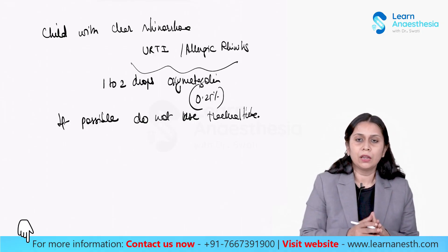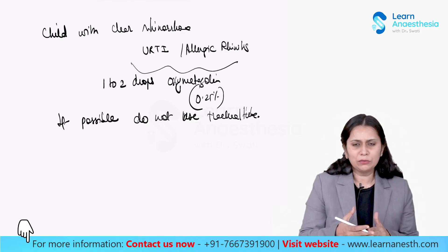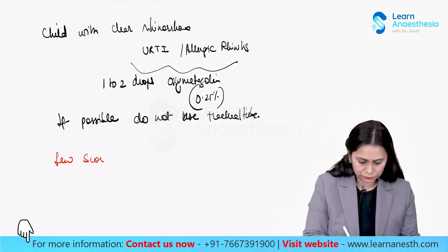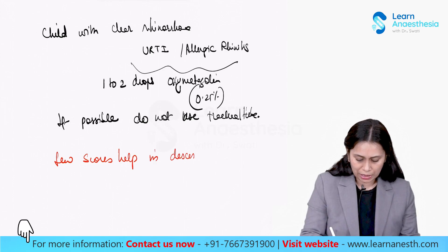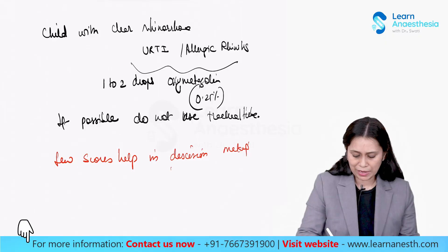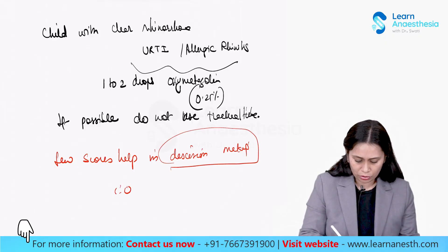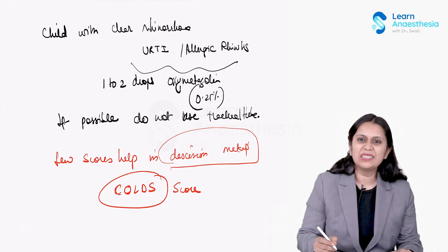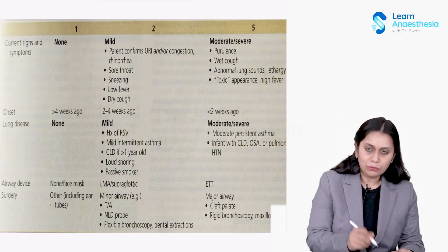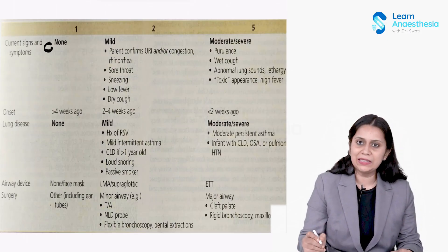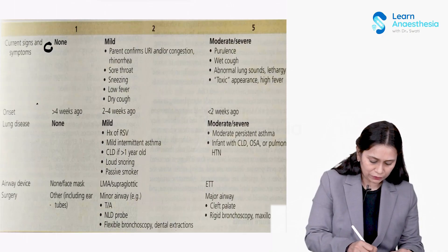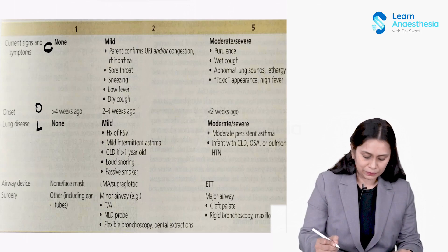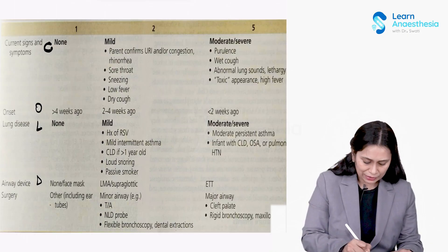There are a few scores which help in decision making in accepting a child with URTI, though they are not very validated or commonly used. One famous score is the COLDS score — C-O-L-D-S. C stands for current signs and symptoms, O stands for onset of the disease, L stands for any lung disease, D stands for the airway device you are going to use, and S stands for the surgery.